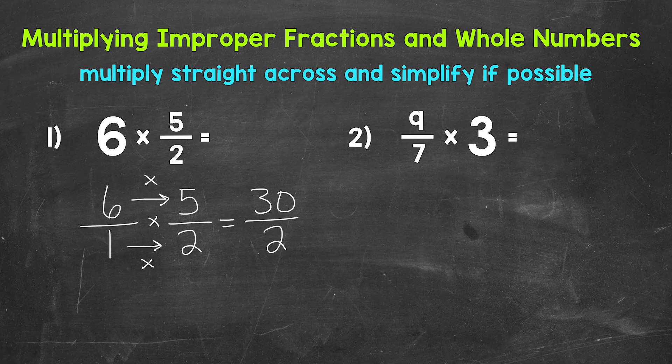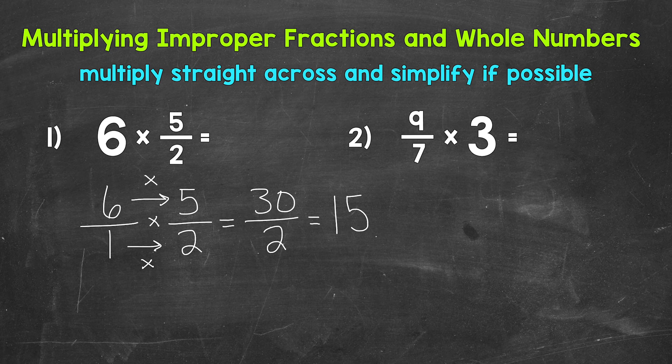But this is an improper fraction, so let's convert this to a mixed number. We do that by dividing the numerator by the denominator: 30 divided by 2. How many whole groups of 2 in 30? Well, 15. And we hit 30 exactly — we do not have a remainder. So this actually works out to be a whole number, not a mixed number. So 6 times 5 halves equals 15.